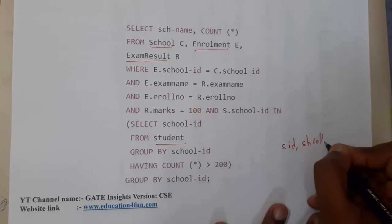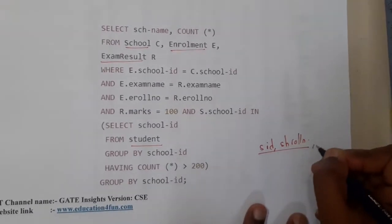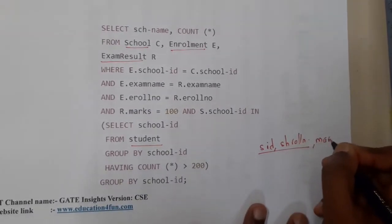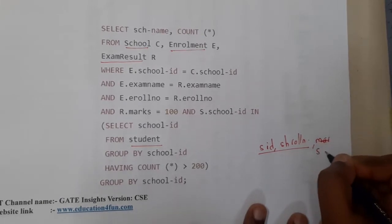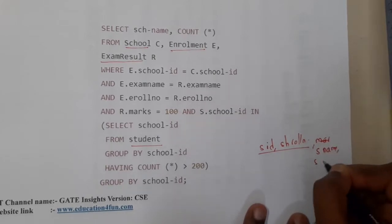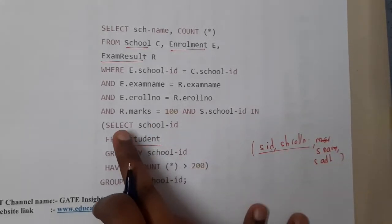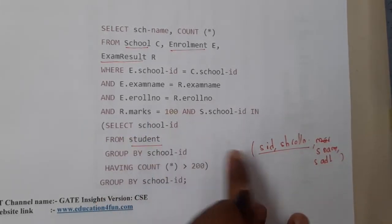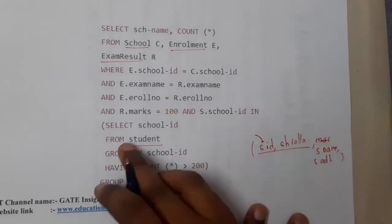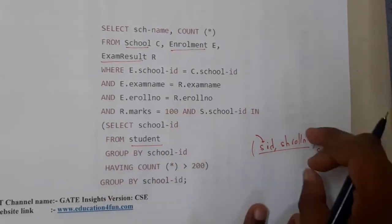We also have a school role number, and these two are the primary keys. Along with this, we have student name and student address. So those are the four parameters in the school table. Here we are selecting the school ID from the student table, grouped by school ID.